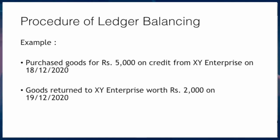Let us go through the procedure of ledger balancing with an example. We have two transactions: number one, purchase goods for rupees 5000 on credit from XY Enterprise, and number two, goods returned to XY Enterprise worth rupees 2000. First we purchased goods from XY Enterprise, but due to some issues the goods were not according to our order, so we returned some goods. These transactions first have to be recorded in the journal.